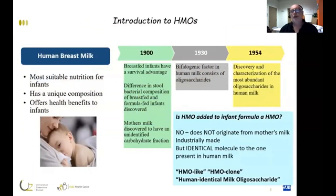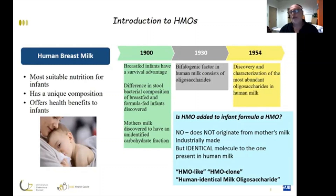Is this really new? No — we have known for more than 100 years that oligosaccharides in mother's milk stimulate the development of bifidobacteria. What is new is that for a couple of years these HMOs can be industrially made. So is HMO added to infant formula a real HMO? In fact, no, because it does not originate from mother's milk — it is industrially made, but it is an identical molecule. Calling it an HMO may be misleading; it would be better to call it HMO-like, an HMO clone, or human identical milk oligosaccharides.